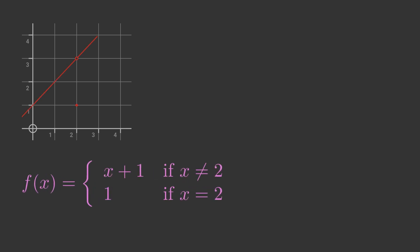There is another situation we sometimes encounter: where a function has both a value and a limit at some point, but they are not equal. A simple example is the piecewise function shown here. A piecewise function consists of two or more different functions that each apply to different intervals over x. In this case, f takes the value of x plus 1 for any value of x except 2; when x is 2, the function takes the value of 1. The straight line has a hole at the point (2, 3), and the red dot at (2, 1) indicates the function value there.